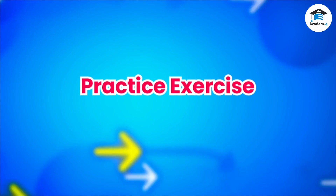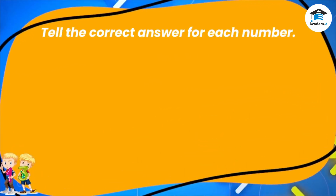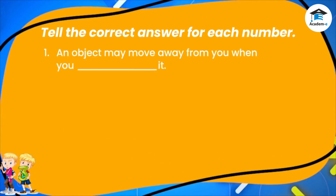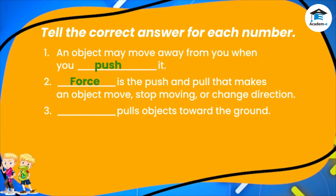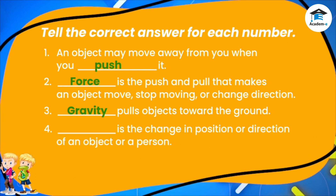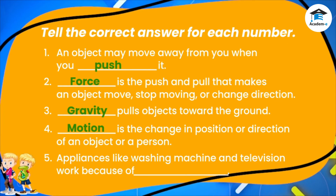Practice exercise. Now, let's have an activity. Tell the correct answer for each number. 1. An object may move away from you when you blank it. The answer is push. 2. Blank is the push and pull that makes an object move, stop moving, or change direction. The answer is force. 3. Blank pulls objects toward the ground. The answer is gravity. 4. Blank is the change in position or direction of an object or a person. The answer is motion. 5. Appliances like washing machine and television work because of blank. The answer is electricity.